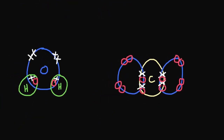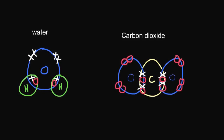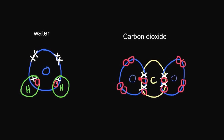Here are the dot and cross diagrams for water and for CO2. In the water molecule, you have one oxygen atom attached to two hydrogen atoms. The oxygen has six electrons in its outermost shell and the hydrogens have one, so you can see how the oxygen is sharing one electron with each hydrogen. In carbon dioxide, the central carbon atom has four electrons in its outermost shell — you know this because it's in group 4. The oxygen has six electrons in its outermost shell and forms a double covalent bond, with four electrons in the centre.